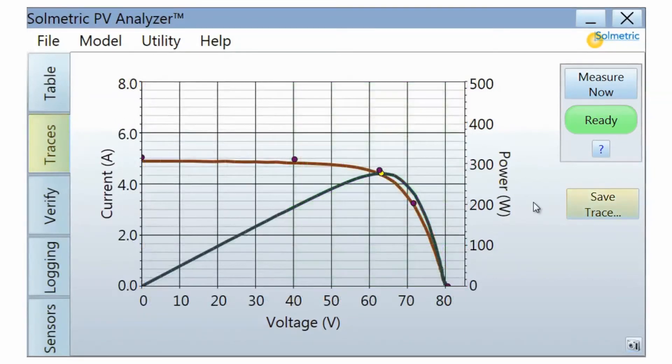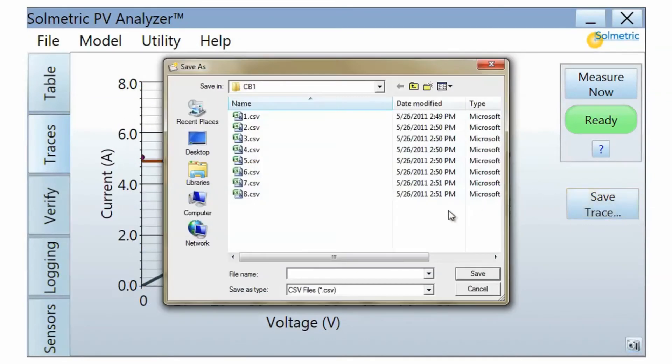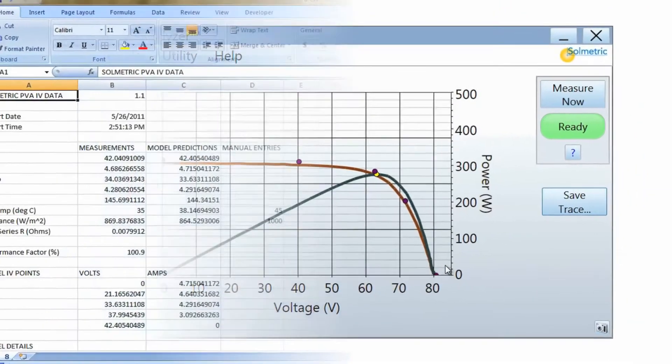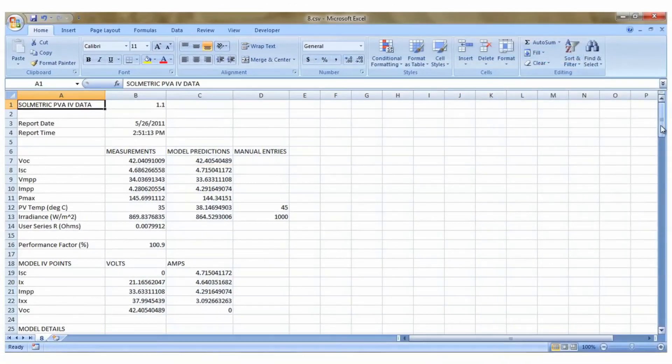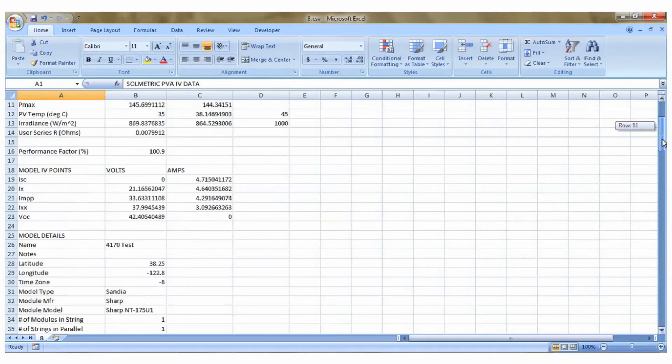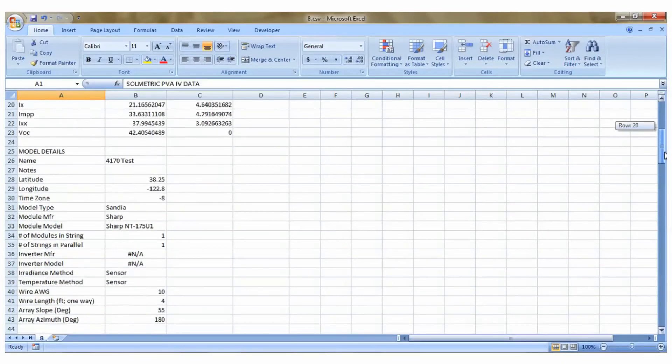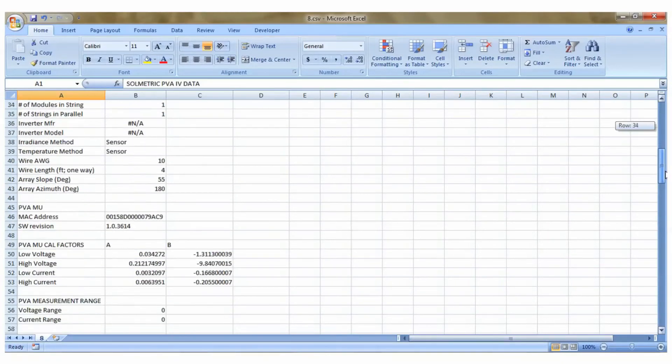In the Traces tab, you can save the results of a measurement by pressing the Save Trace button. Each trace can be stored on the PC in the form of a CSV file which can later be opened in a spreadsheet program such as Microsoft Excel. Data files include a record of all the measurements made by the PV Analyzer, as well as the predictions of the performance model.